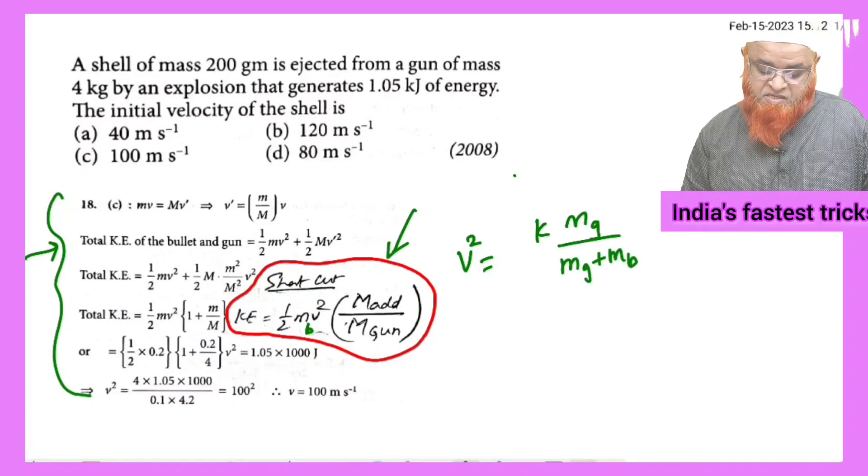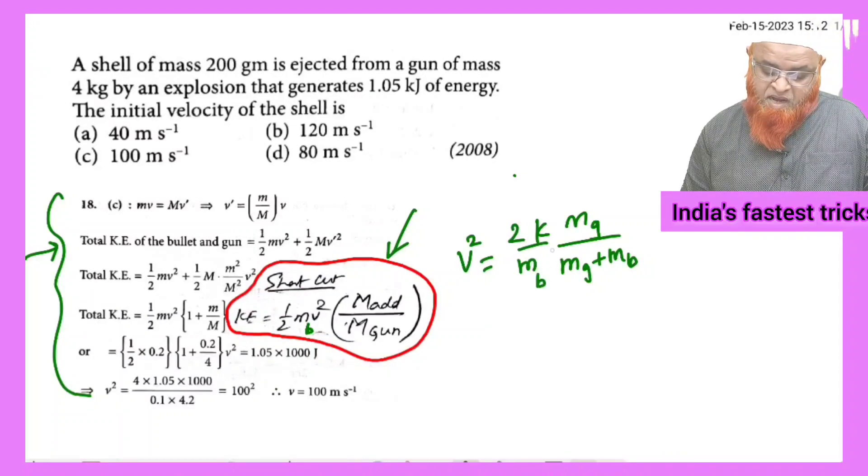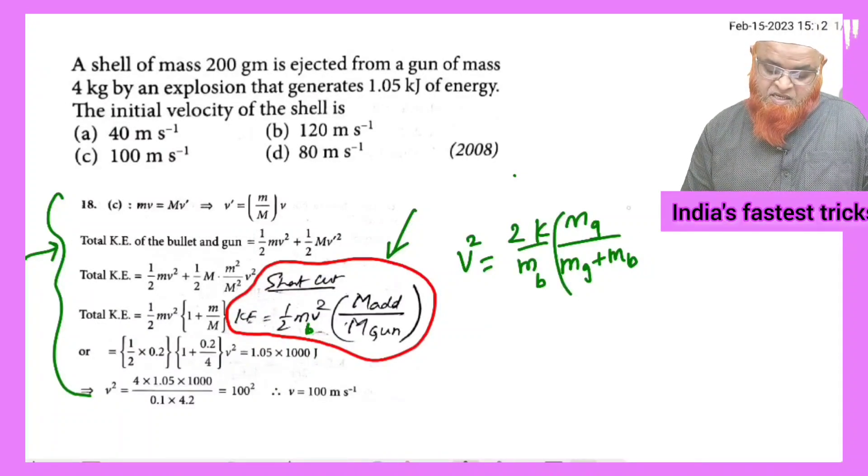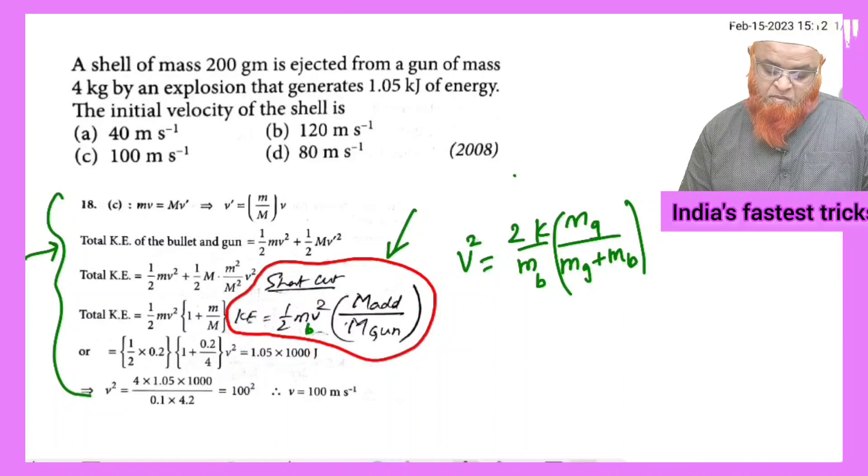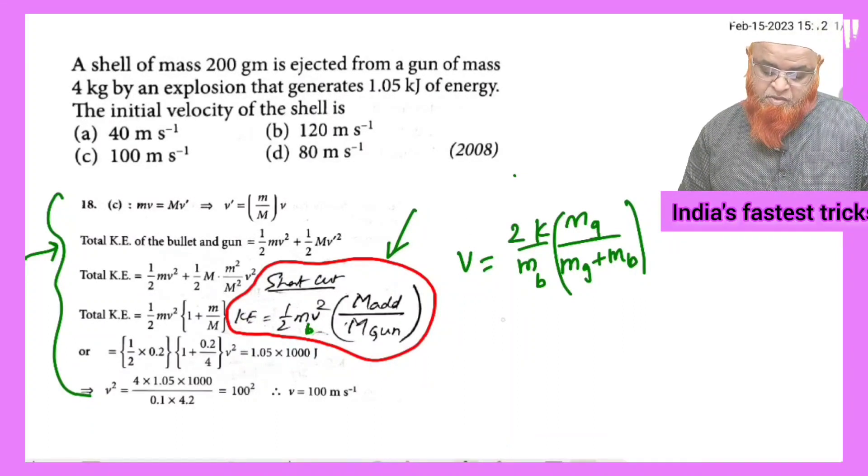This is 2K by m, mass of the bullet. You can apply this shortcut formula. The square should be removed and it should be made square root like this.